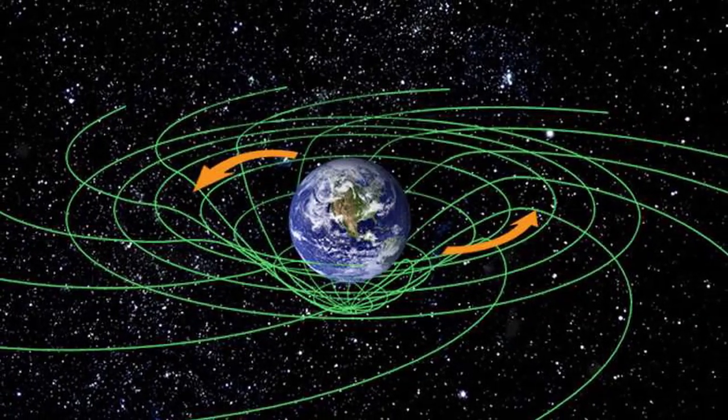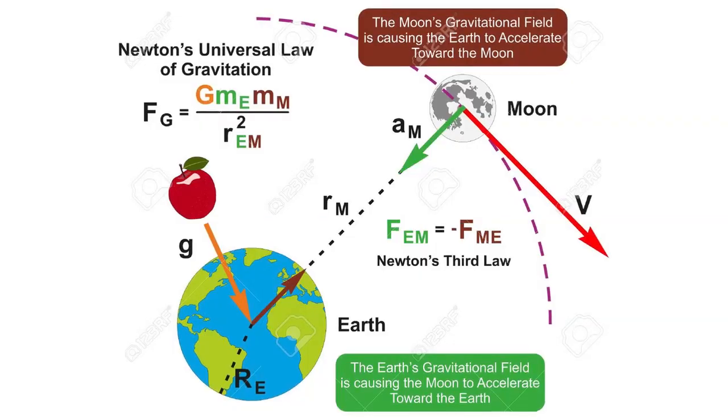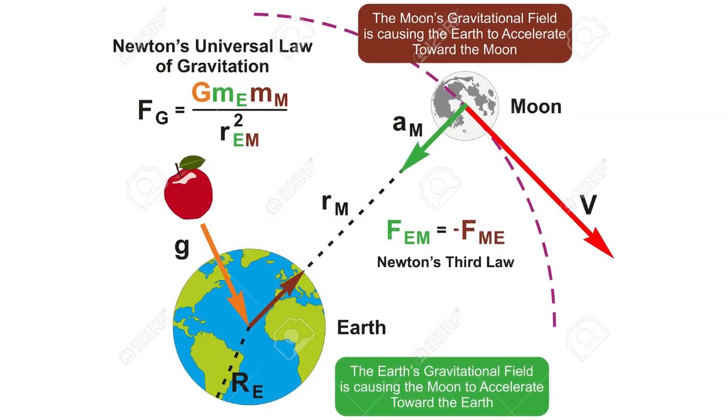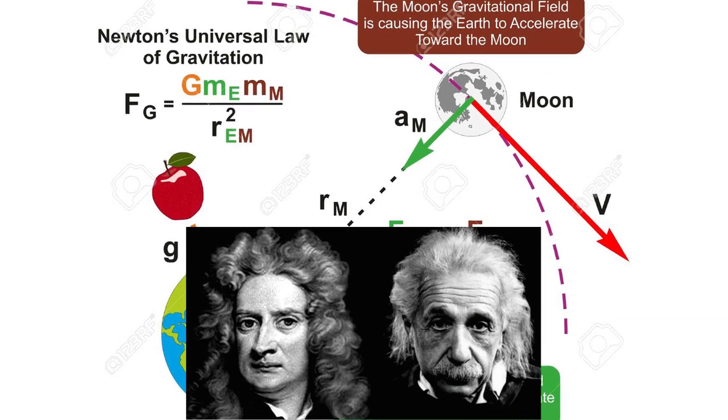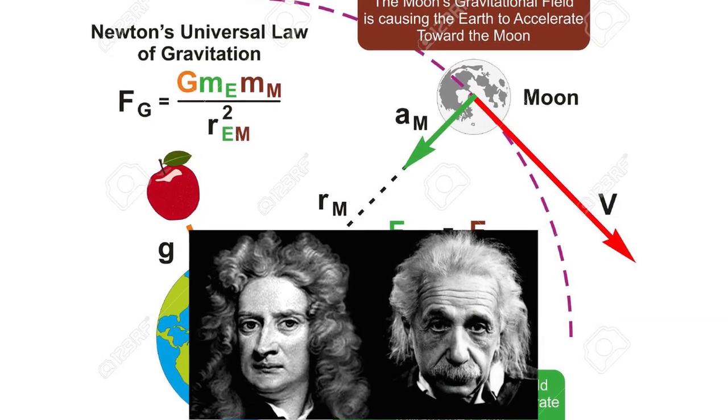Much like a heavy weight on a trampoline, massive objects distort the space around them. This was proposed as the mechanism behind the force we know as gravity. Einstein's calculations based on this idea yielded far more accurate predictions than even Newton's laws of motion.